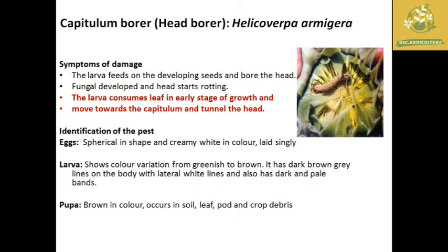The first pest is the capitulum borer, which is a head borer, and the scientific name is Helicoverpa armigera. We already know that Helicoverpa armigera has a wide range of hosts and has been mentioned in each video because it is an important pest in all crops. The larvae consume leaves in the early stage and move towards the capitulum once the sunflower matures, boring the grains and tunneling into the head, causing yield loss, and in several cases destroying the whole plant.